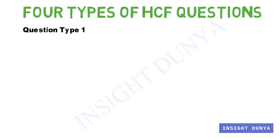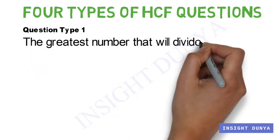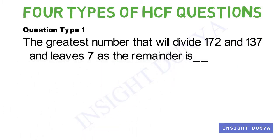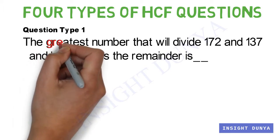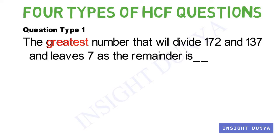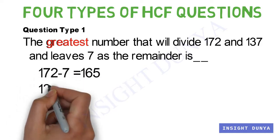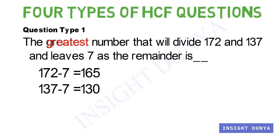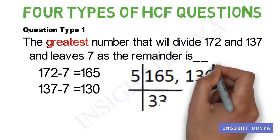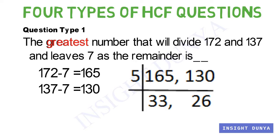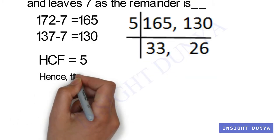Question type 1: The greatest number that will divide 172 and 137 and leaves 7 as the remainder. In this question, the word 'greatest' is the keyword so we have to calculate the HCF. First, subtract 7 from each number: 172 − 7 = 165, and 137 − 7 = 130. Now find HCF of 165 and 130. 5 × 33 = 165, and 5 × 26 = 130. The remainders 33 and 26 are not divisible by any common number, so HCF = 5. Hence the required number is 5.